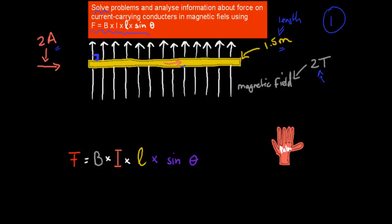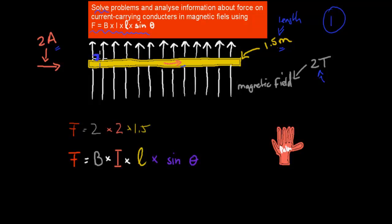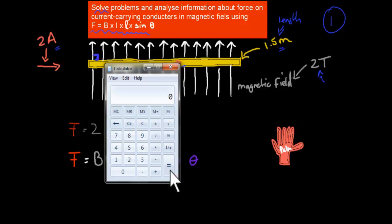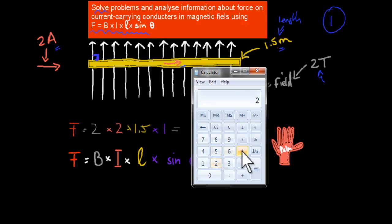So all we have to do is apply the formula. Force equals B times I times L times sine theta. B, our magnetic field, was 2. We times that by our current, which was 2 amps. Then our length was 1.5. And if you put sine 90 into your calculator, you get 1. So that is 2 times 2 times 1.5 times 1, which equals 6.